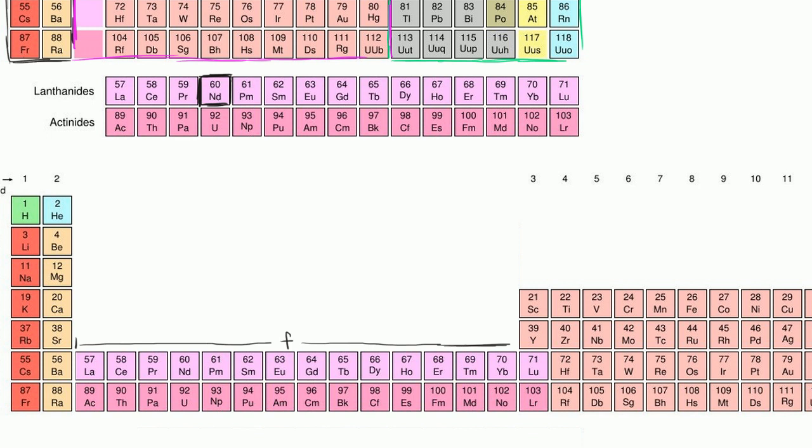So given that, let's figure out the electron configuration for neodymium. And I'll give you a hint. In the d-block, you go back and backfill one subshell below, or one shell below the period that you're in. In the f-block, you go two, you go back two shells. So here, we're not filling out the 6f subshell and not even the 5f subshell, but the 4f subshell.